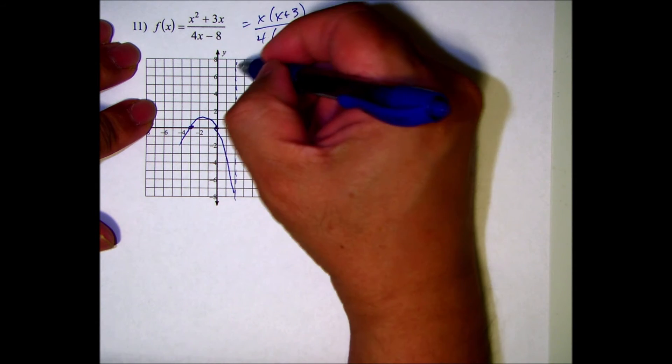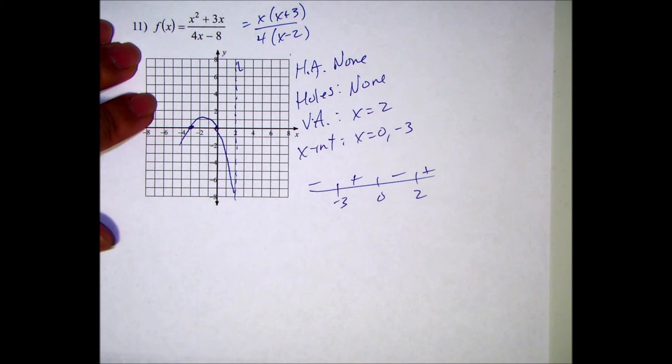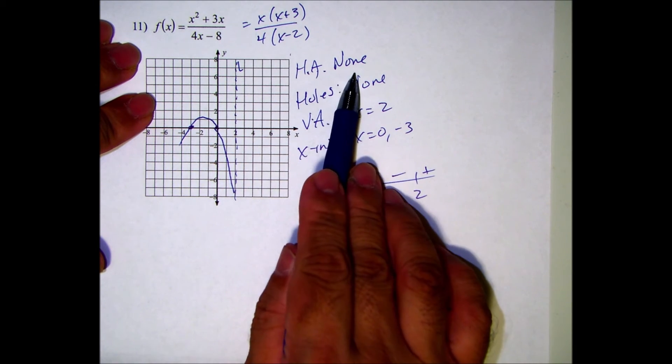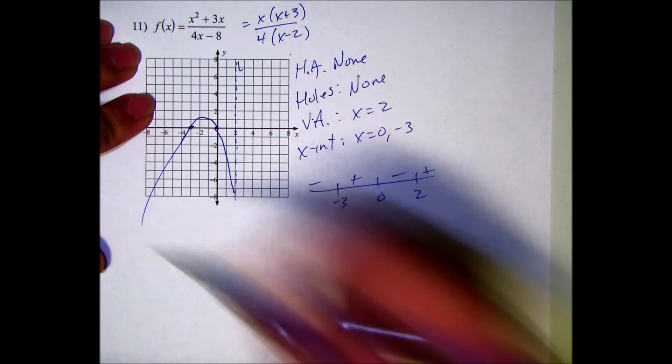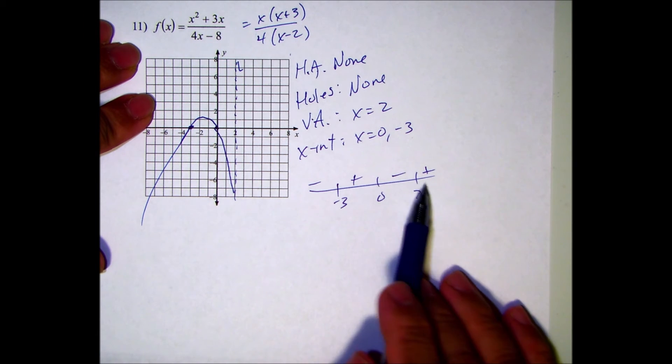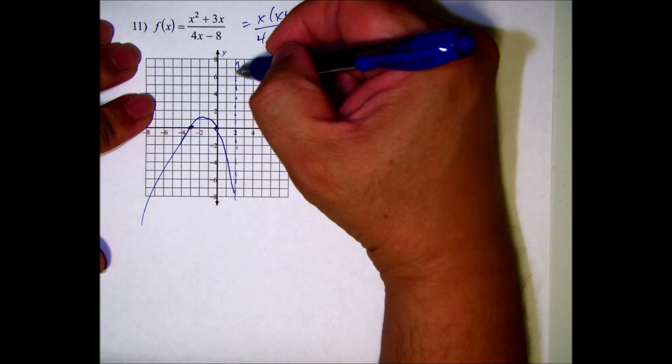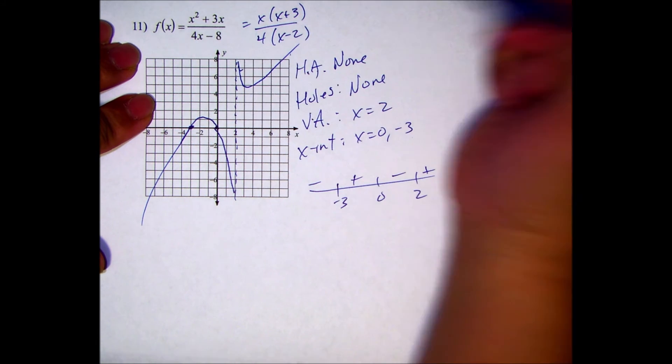What happens on the ends? Well, there's no horizontal asymptote, and the sign doesn't come back up to positive, so that means it's got to keep going down. For right of 2, there's no horizontal asymptote, so it has to come back up.